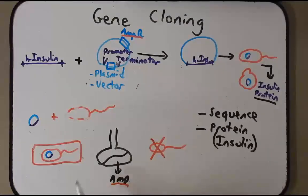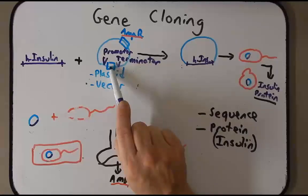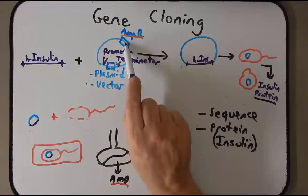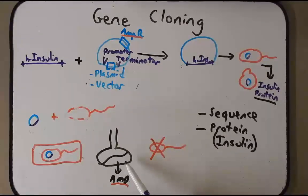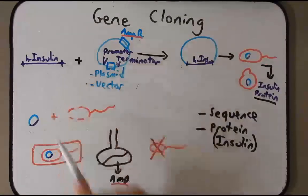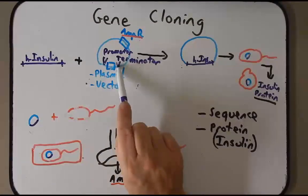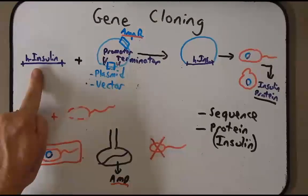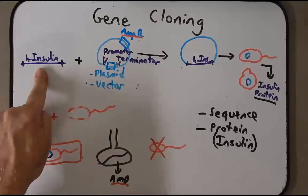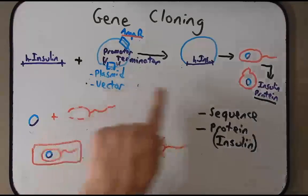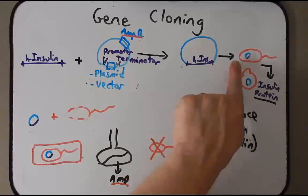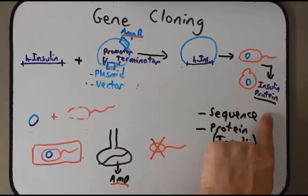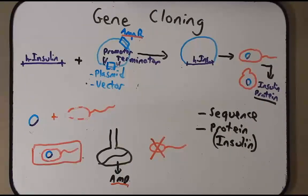So the E. coli knows where to begin and stop making protein — otherwise the plasmid is just a ring of nucleotides that means nothing to it. To review: plasmid vectors contain a restriction site where you put the insulin gene; they contain an ampicillin resistance gene so only bacterial cells with the plasmid survive; and if you're going to make the protein from the insulin gene, you need a promoter and terminator sequence so the bacterial cell knows when to begin and stop making messenger RNA that will be turned into protein. The process of gene cloning involves taking the gene you want, placing it in a plasmid vector, verifying it's in there, transforming it into E. coli or yeast, and then expressing that vector to make the protein of interest.